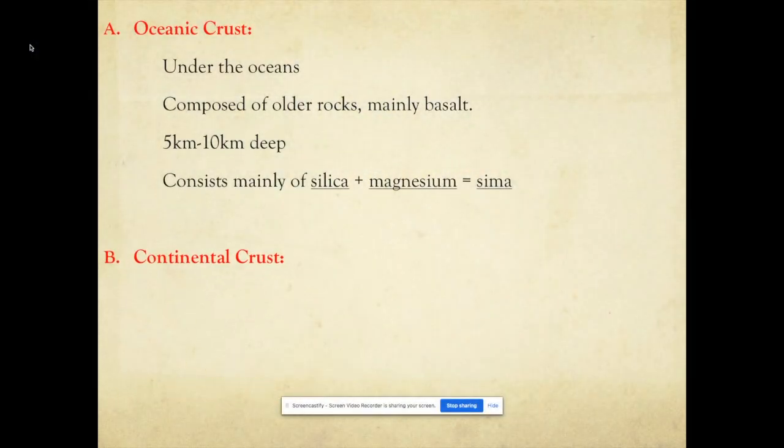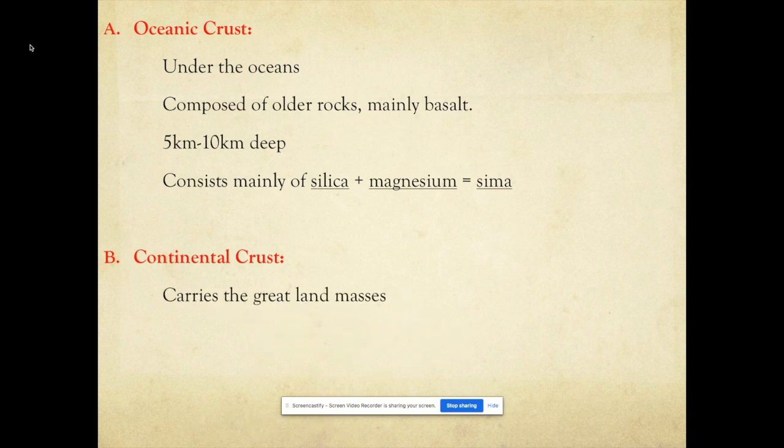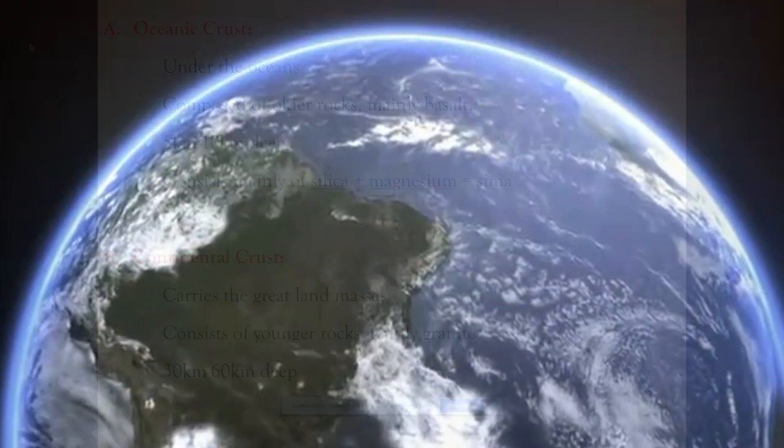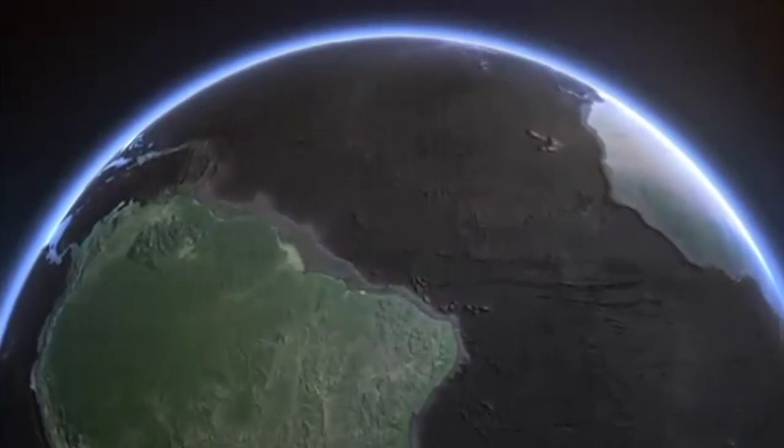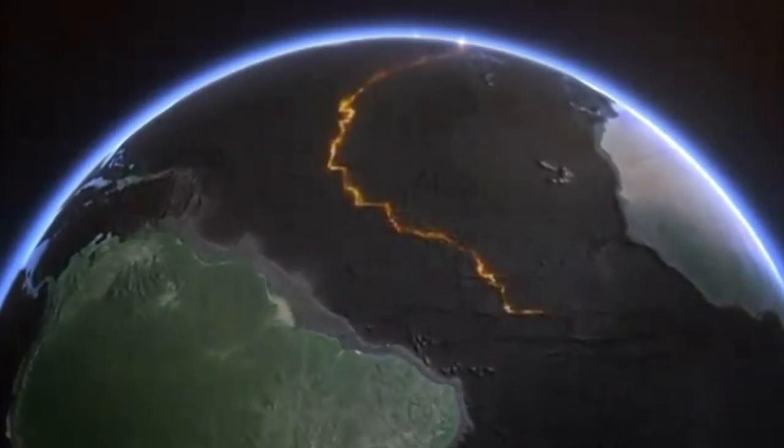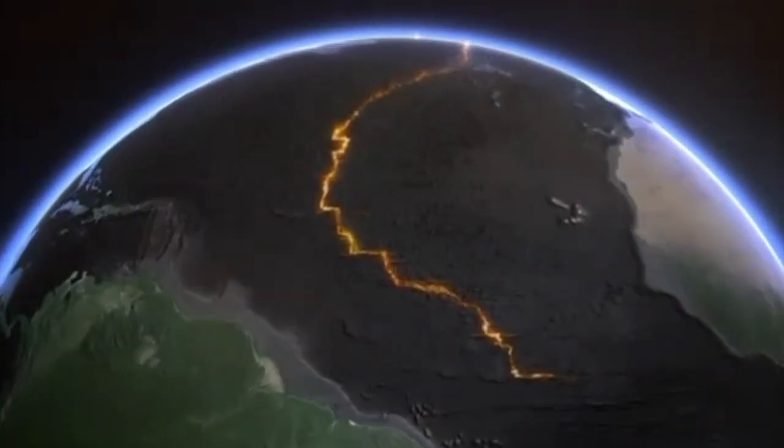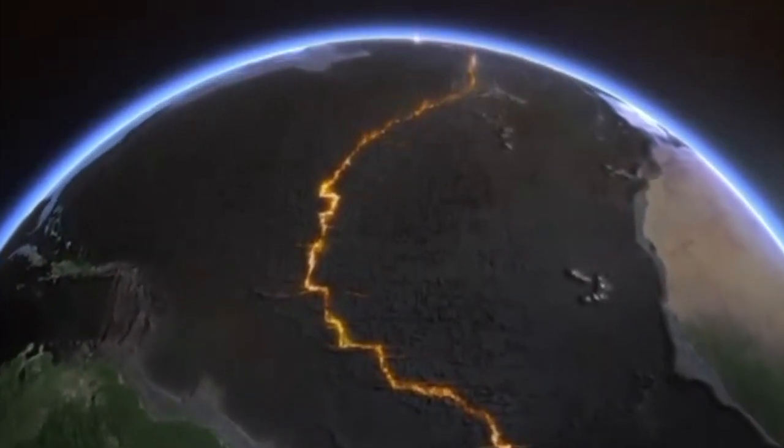The continental crust on the other hand varies in thickness, somewhere between 30 kilometers and 60 kilometers. It mainly consists of younger lighter material such as granite. It's composed mainly of silica and aluminum and this is referred to as SIAL. The continental crust does not begin at the coastline but in ocean water far beyond the shore. This submerged area of continental crust is known as the continental shelf.